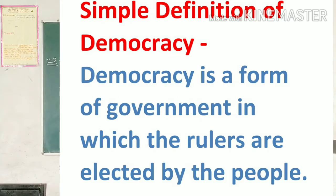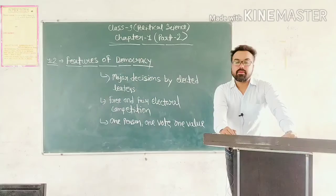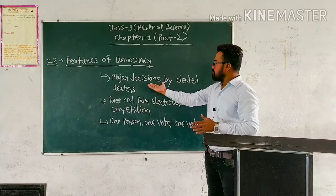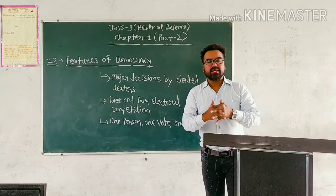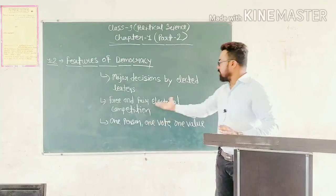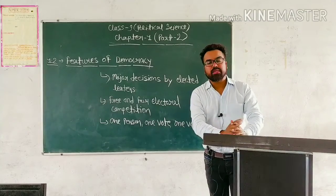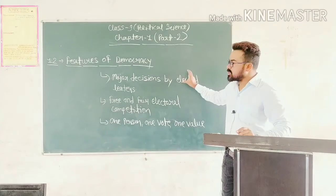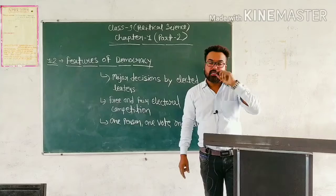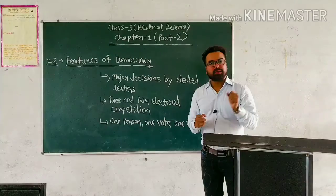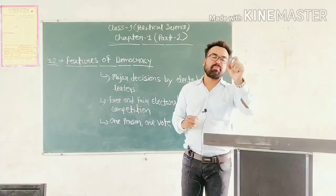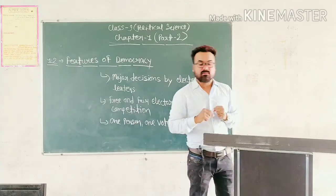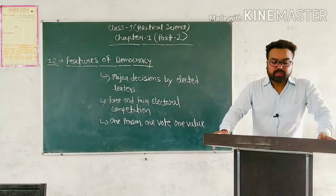Democracy ایک government کا form ہوتا ہے جہاں پر لوگ اپنے rulers کو چونتے ہیں۔ لیکن اب یہاں پر کچھ سوال کھڑے ہوتے ہیں۔ کچھ stories ہیں جیسے major decision by elected leaders، free and fair electoral competition، اور one person one vote and one value۔ یہ part second of this chapter ہے — part one کا link میں نے description میں دے دیا ہے۔